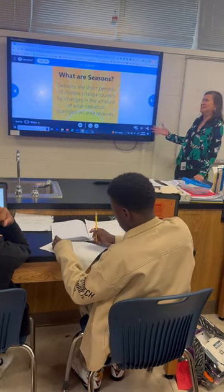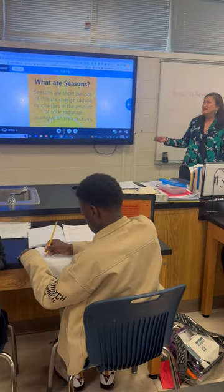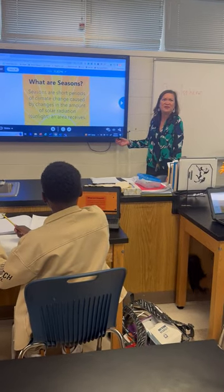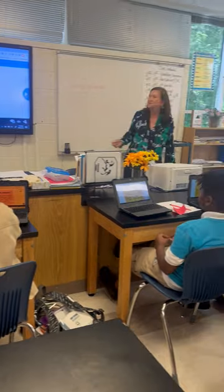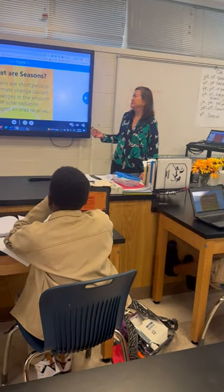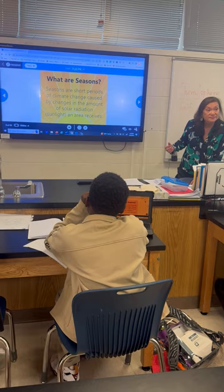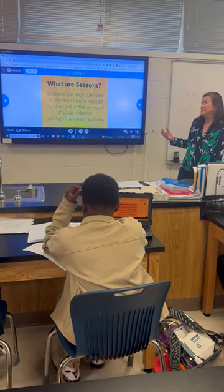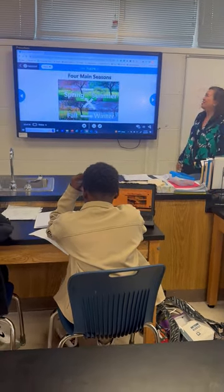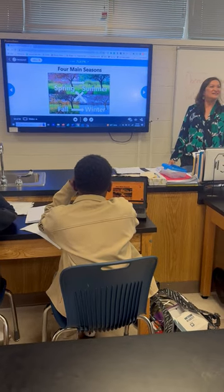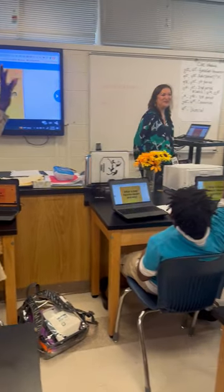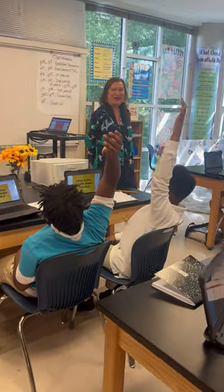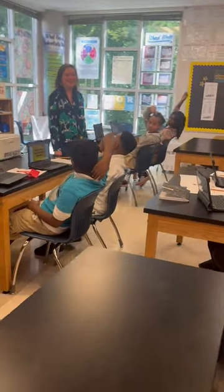Let's continue. This time, we're talking about seasons. What are seasons? Owen: Seasons are short periods of climate change caused by changes in the amount of solar radiation. There are four main seasons. What's your favorite season? William: Spring, because it isn't too cold or too hot — it's in between.